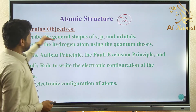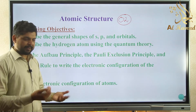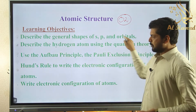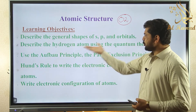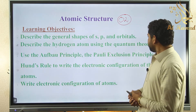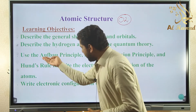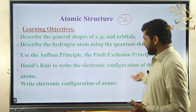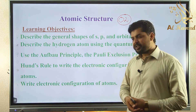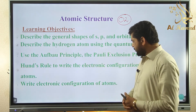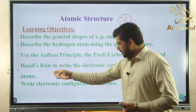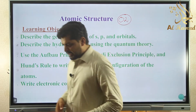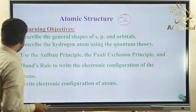Further objectives in Atomic Structure: Use the s, p, d, f orbital concept to describe the hydrogen atom. Learn how to write electronic configurations of different atoms by following the relevant rules such as Hund's Rule, Aufbau principle, and Pauli exclusion principle.